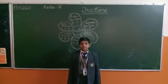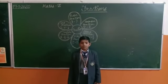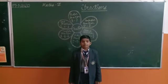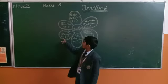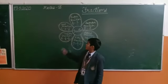Unlike fraction: the fractions having different denominators are called unlike fractions. Example: 4 upon 7, 6 upon 11, 9 upon 14.